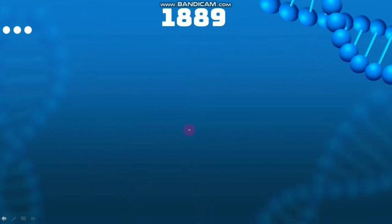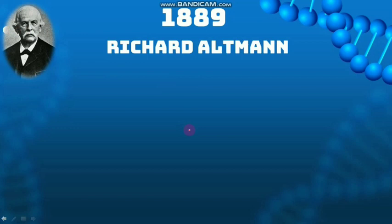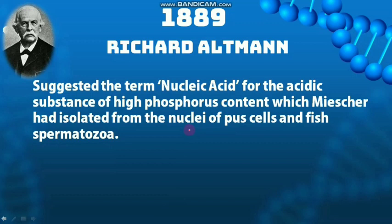In 1889, another scientist called Richard Altman characterized that particular Nuclein. He suggested the name 'Nucleic acid' because it is acidic in nature and contains high phosphorus. So the substance called Nuclein by Frederick Miescher was now being called Nucleic acid, a name proposed by Richard Altman.